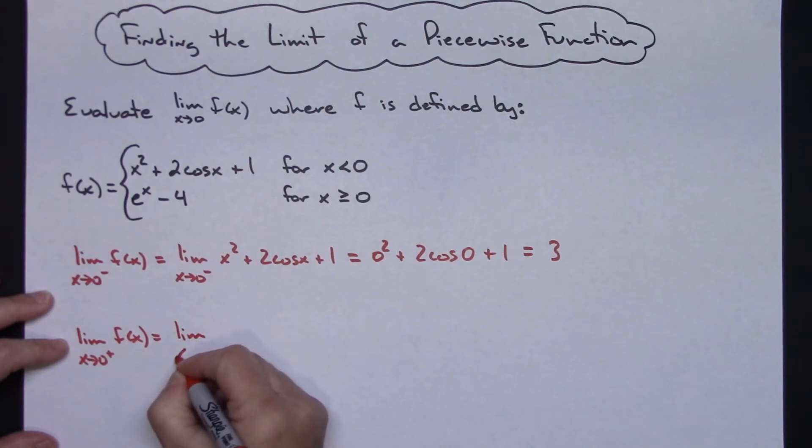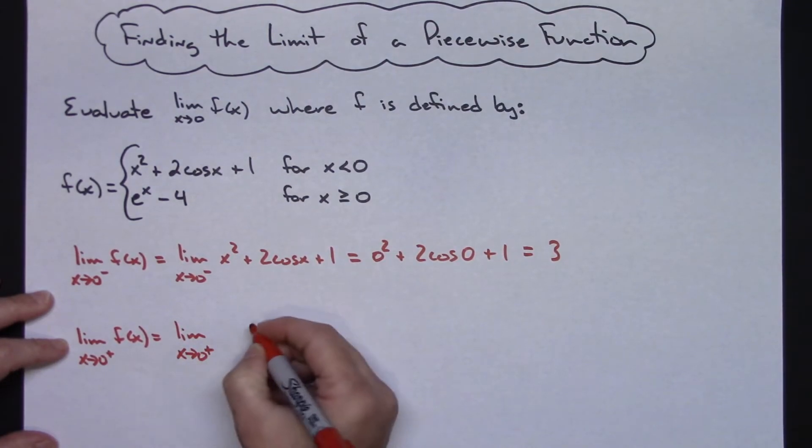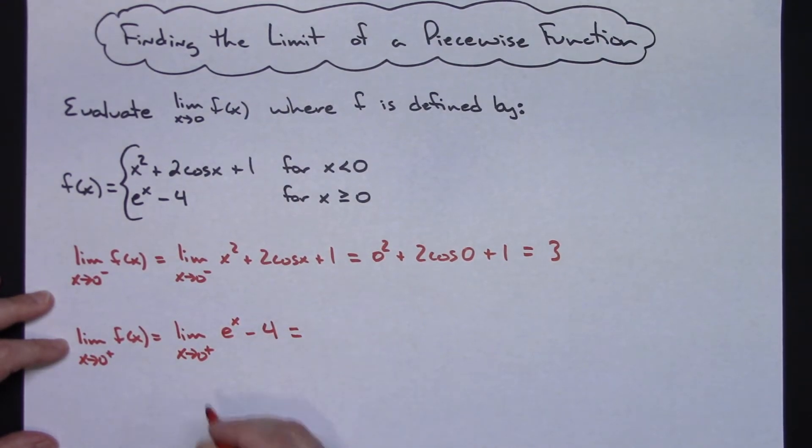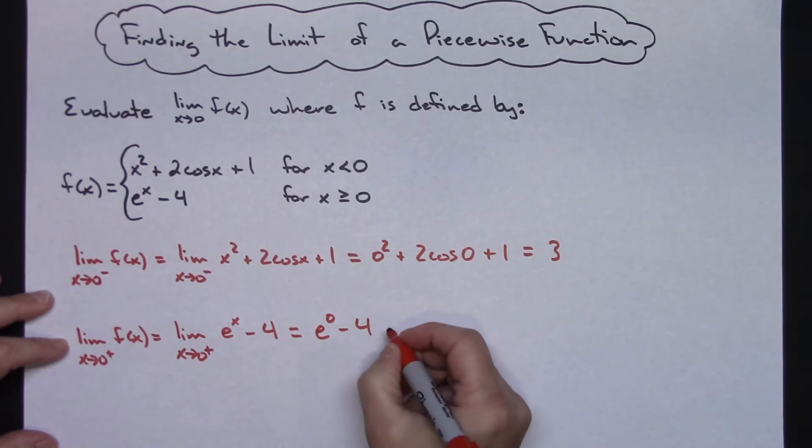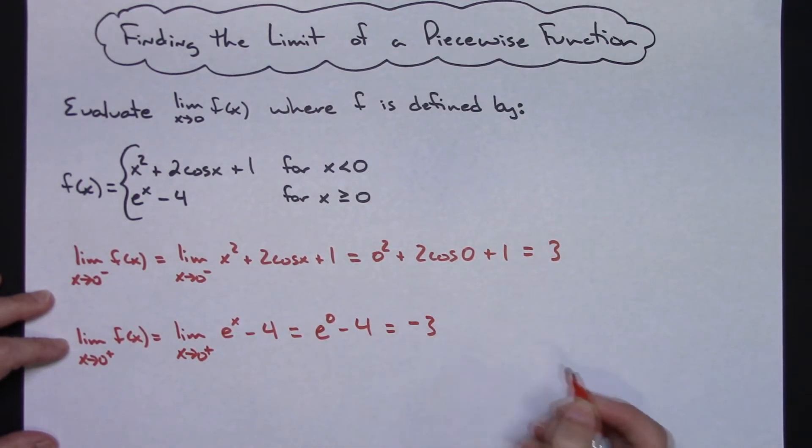So the limit as x approaches 0 from the right is e to the x minus 4. Again I'm going to do a direct substitution, so e to the 0 minus 4. Anything raised to the 0 power is always 1, so 1 minus 4 is going to give me a negative 3.